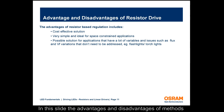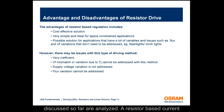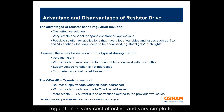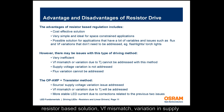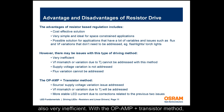The advantages and disadvantages of methods discussed so far are analyzed here. A resistor-based current regulation is very cost-effective and very simple for space-constrained applications, and ideal for applications where color, flux, and VF mismatch are not a significant concern, such as flashlights or torchlights. However, with a resistor-based solution, VF mismatch, variation in supply voltage and flux, and color shift cannot be addressed, and it is also very inefficient. With the op amp plus transistor method, source variation and VF mismatch are addressed.